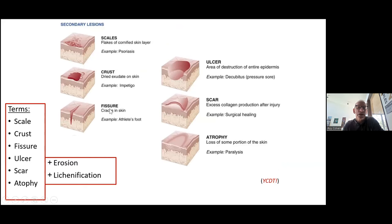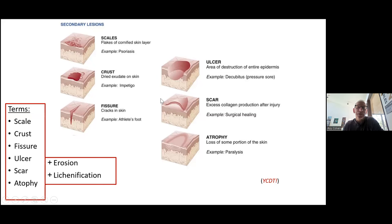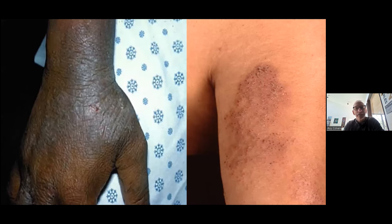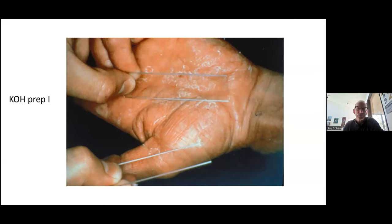Secondary lesions are things like scale, crust, fissures, and ulcers — things that didn't appear initially but developed as the primary process played itself out. For example, pyoderma gangrenosum is generally seen as an ulcer, but it's not the primary lesion — it usually starts as an inflammatory papule, nodule, or even blister, and eventually becomes ulcerated. These are useful terms you can learn to use accurately. For instance, here are secondary changes of lichenification with post-inflammatory pigmentation — primarily a plaque with crusting and superficial erosions in an irregular shape.